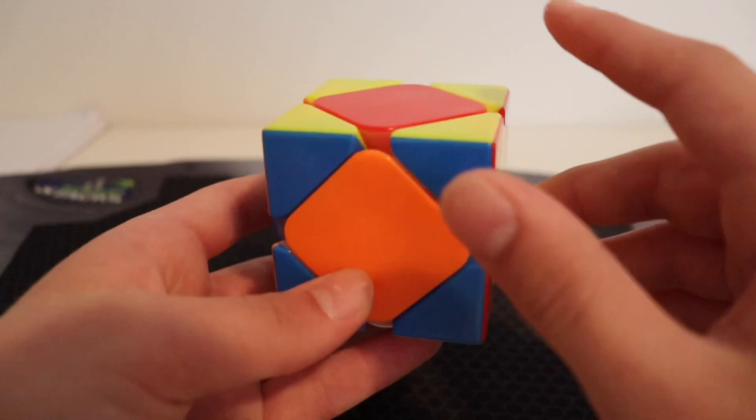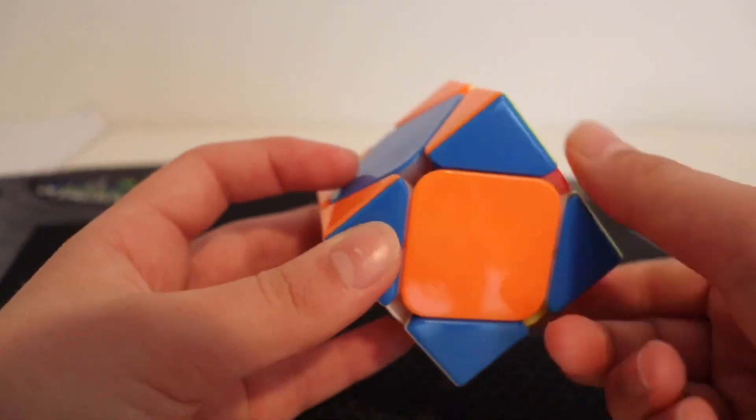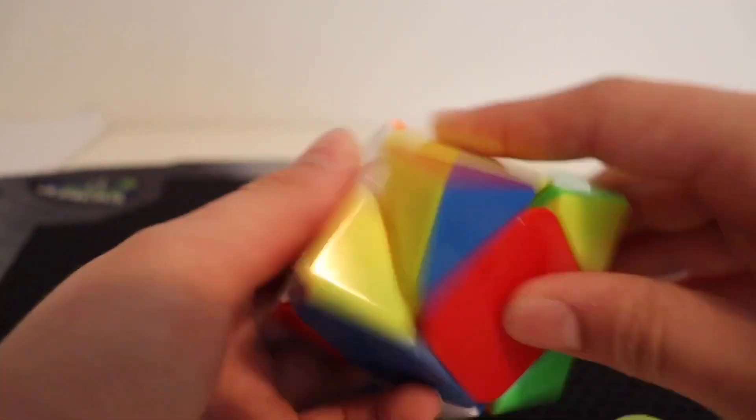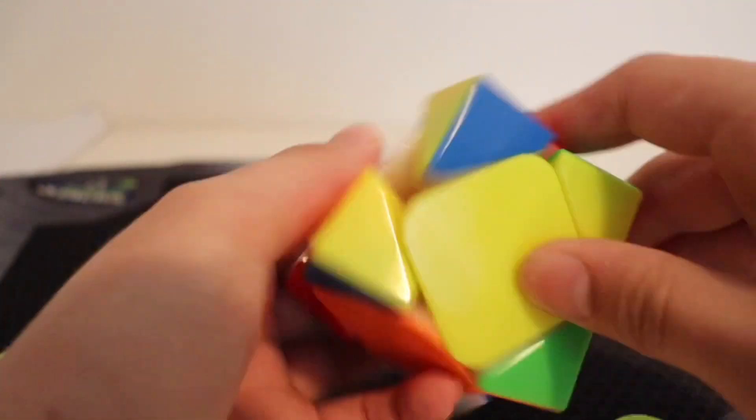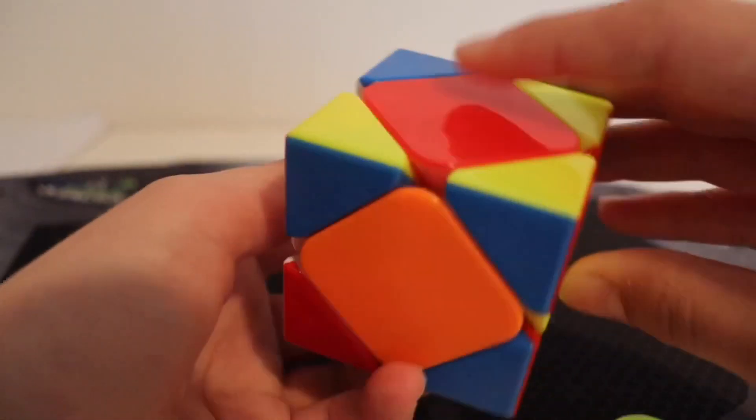And for the first one, the U-center is on the right. Then you're going to do an R prime into three sledges, and then one move back. So, R' and then triple sledge, and then an R.